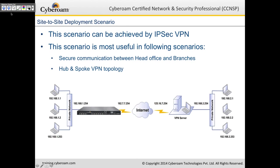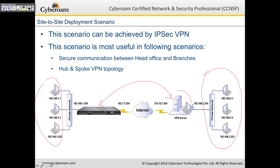The next scenario is site-to-site deployment, where you have a head office and branch office and create a tunnel between them. The remote device can be CyberROM or any third-party device supporting standard IPSec. This is most useful for secure communication between head office and branches and can be deployed in a hub-and-spoke VPN topology. You can also have granular firewall control, for example blocking a specific source IP from reaching a specific destination IP via VPN-to-LAN rules.